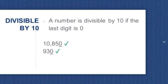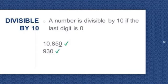Divisible by 10. A number is divisible by 10 if the last digit is 0. 10,850 and 930 both end in 0, so they are divisible by 10.